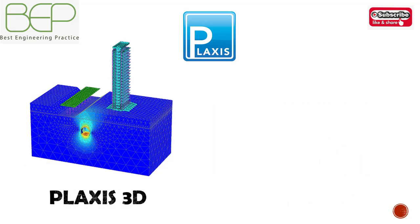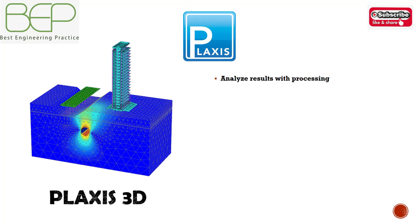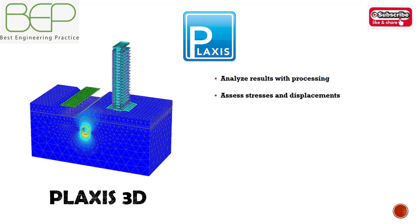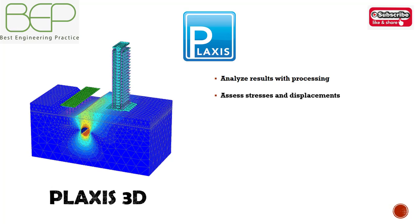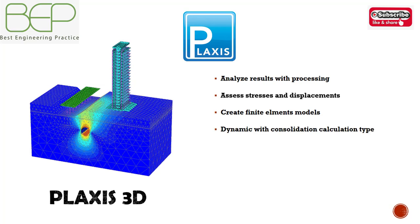PLAXIS 3D is a three-dimensional software that leverages powerful and versatile post-processing to display forces, stresses, and flow data in contour, vector, and iso-surface plots. It accurately models the construction process by activating and deactivating soil clusters and structural elements in each calculation phase. PLAXIS 3D efficiently creates models with a logical geotechnical workflow and simulates the coupling between soil deformation and transient conditions in dynamic loading phases.